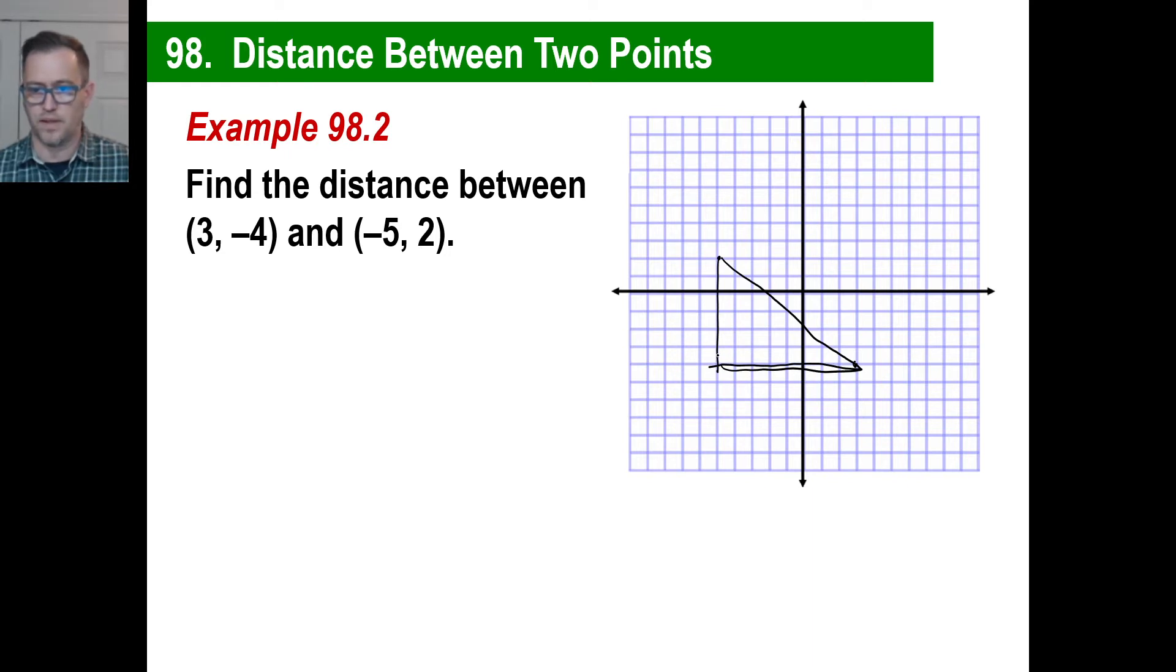It doesn't matter how perfect it is. So let's find the distance of this side. And that will be 1, 2, 3, 4, 5, 6. And this will be 1, 2, 3, 4, 5, 6, 7, and 8.